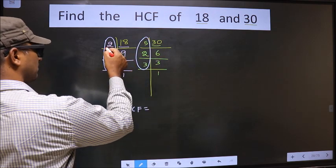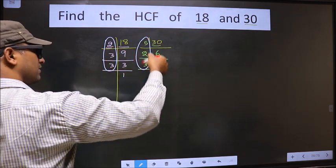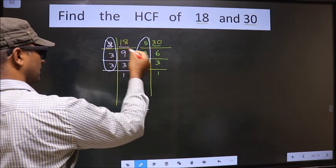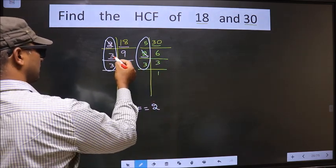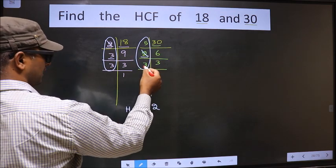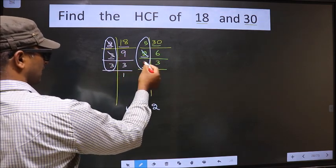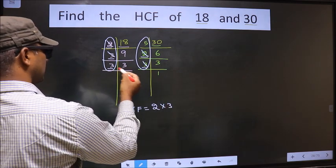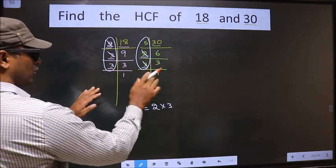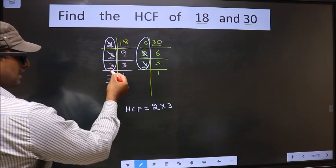Starting with the number 2. Do we have 2 here? Yes. So you cut 2 right here. Next number 3. Do we have 3 here? Yes. No more numbers are left.